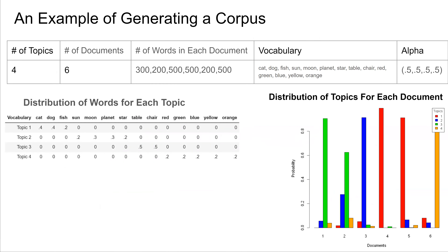We now give an example of how to generate a corpus in LDA. In this example, we have four topics and six documents, with each document having the number of words specified in the table. Our vocabulary consists of 14 words. We set the Dirichlet parameter alpha to be (0.5, 0.5, 0.5, 0.5) — an arbitrary choice. This Dirichlet distribution will be used to sample the distribution of topics for each of the six documents. For the sake of this example, we assume the distribution of words for each of the four topics is known in advance.